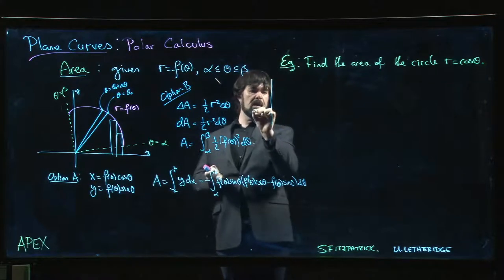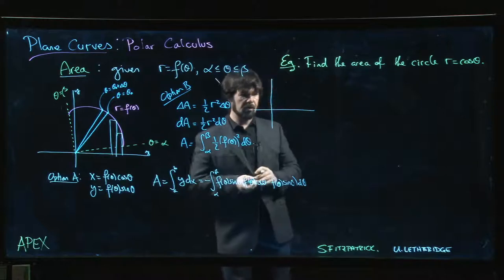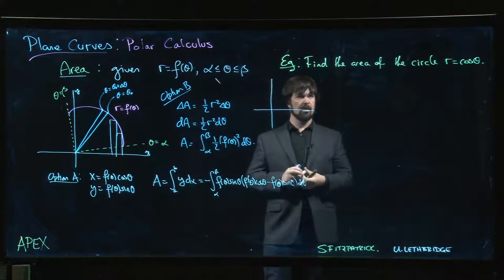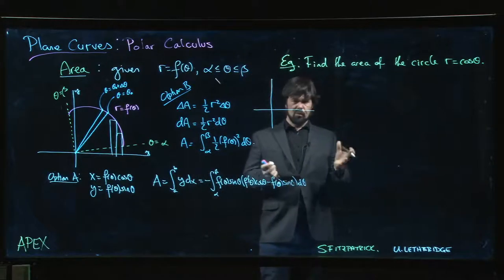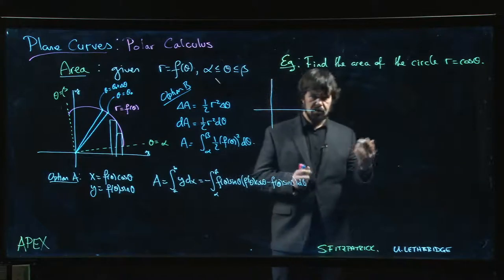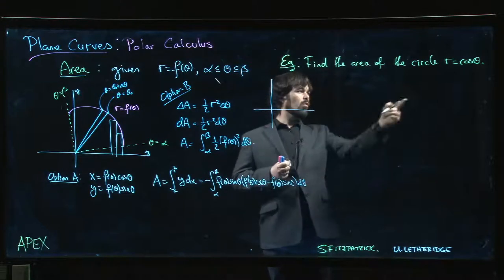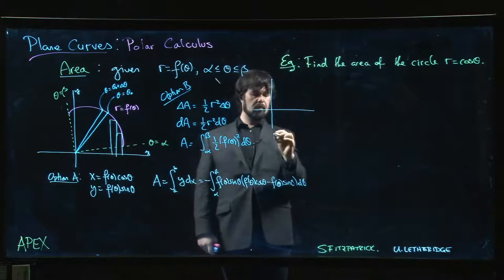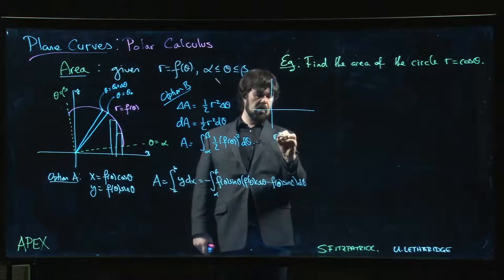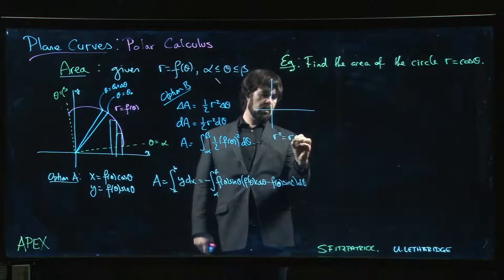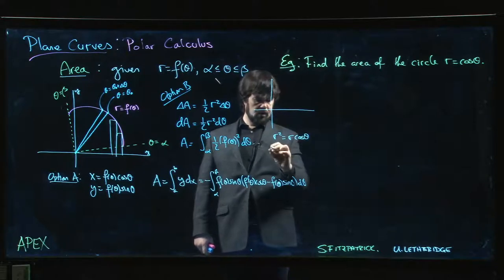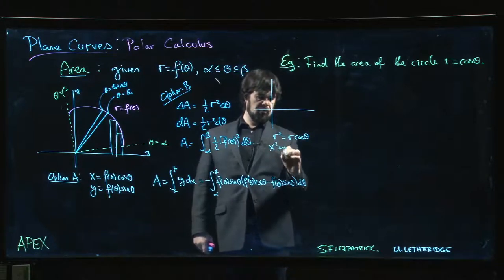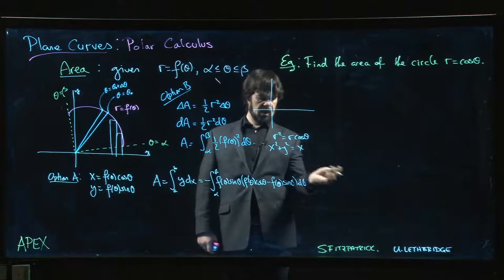And like any area problem, it helps if you know what this object looks like that we're computing the area from. Also, it's a circle, so if we know the radius, we can always do pi r squared. So the way you figure this one out, we did a similar one like this in the previous section. Multiply both sides by r, and you get r squared is r cos theta. So x squared plus y squared is equal to x.